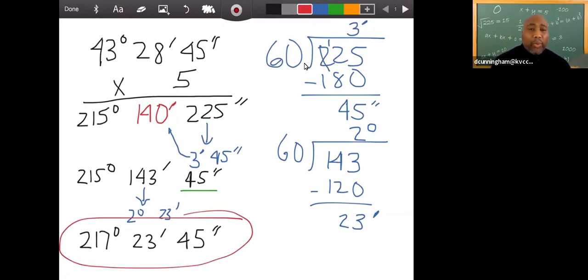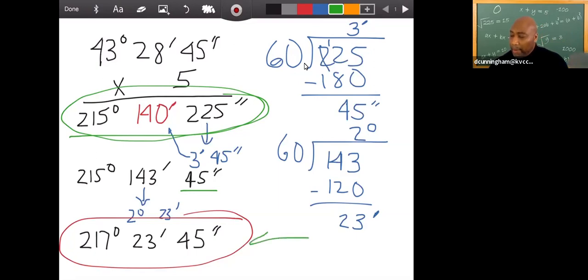Now, sometimes when you do the multiplication, you may not have to convert the seconds. The seconds may be okay. You may only have to convert the minutes. And so make sure when you look at your answer that both the minutes and the seconds are reduced to the term that they need to be less than 60. So don't write your answer with how I'm circling in green. Do not write it like that. Convert it to degrees, minutes and seconds of 217 degrees, 23 minutes, 45 seconds.